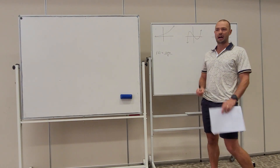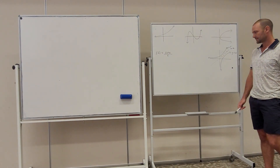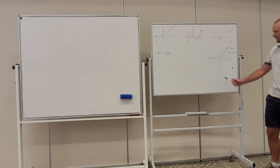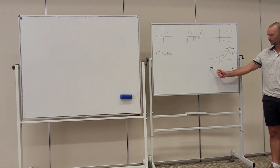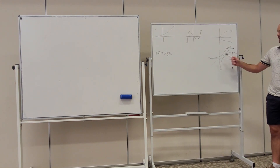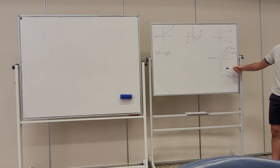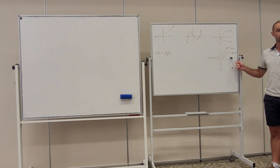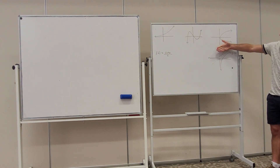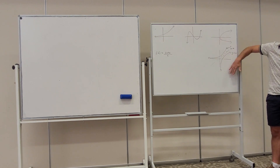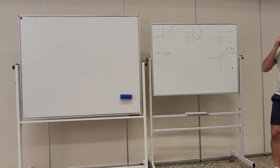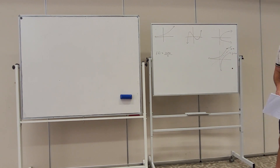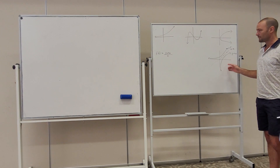What you should remember from Methods: if we have the line y equals x, then the function e to the x and ln of x are the inverse of one another, because they are the mirror image of one another. That's something we're covering in 12 Methods.